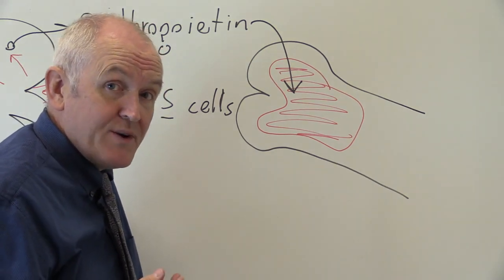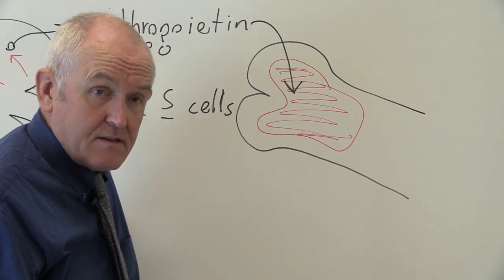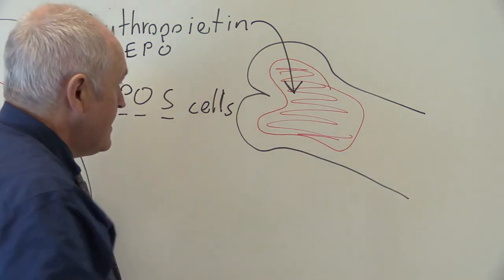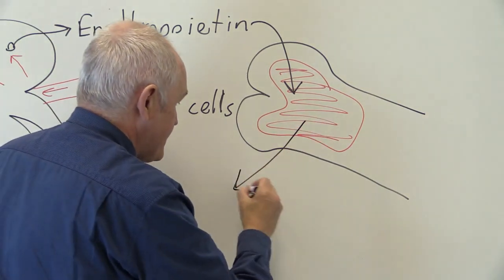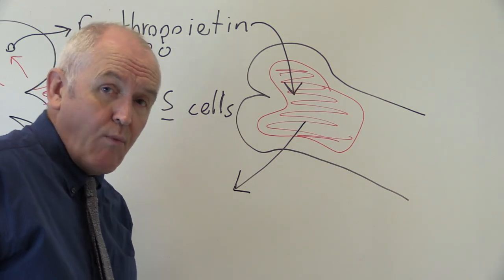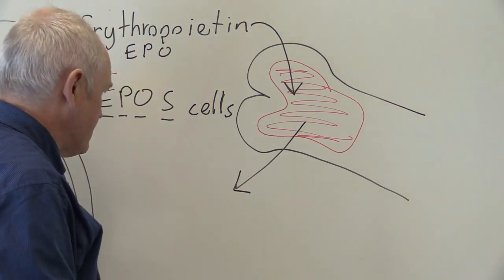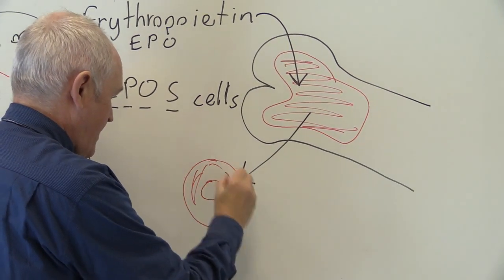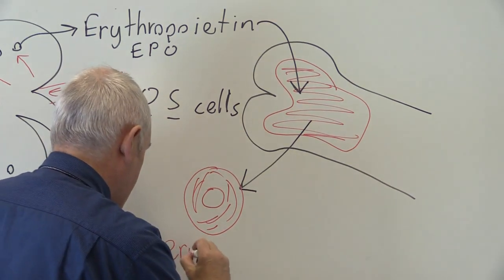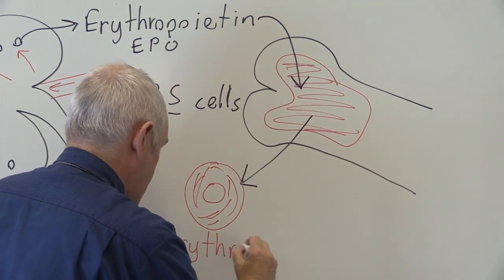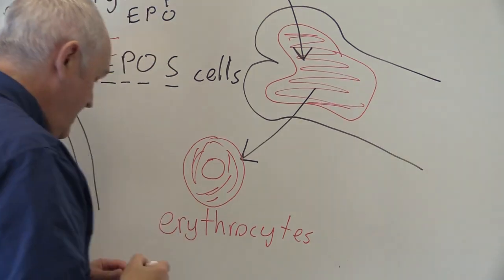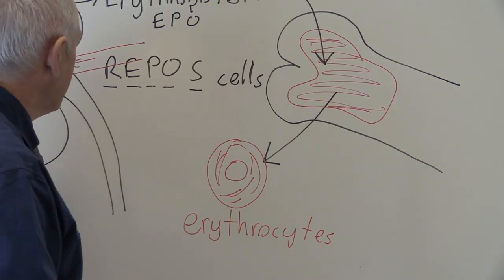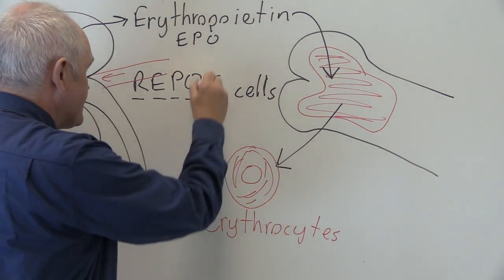So erythropoiesis is the production of red blood cells as stimulated by erythropoietin. So the increased erythropoiesis is going to result in the production of more red blood cells, more erythrocytes. Now of course the erythrocytes are going to carry oxygen, and they're going to circulate to the kidney.